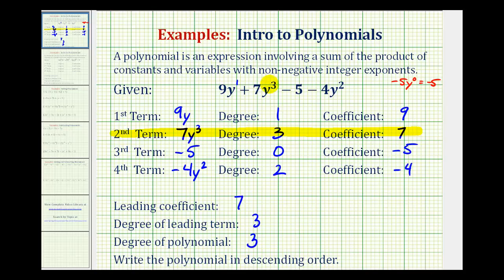So to write this in descending order, we would have seven y cubed. The next highest degree is degree two. So we'll have minus four y squared. The next highest degree would be the degree one term. So we have plus nine y. Followed by the degree zero term with a constant term. So we have minus five.